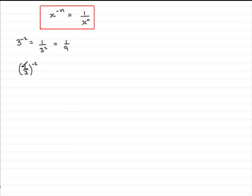Well my x, if you like, is the 2 thirds and the n is the power 2. So according to the rule this will be 1 divided by 2 thirds, my x value, to the power n, n being now 2.